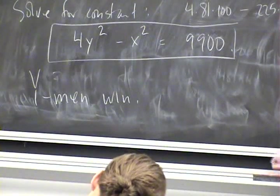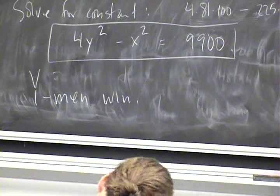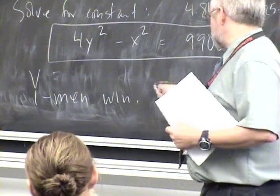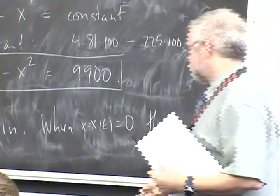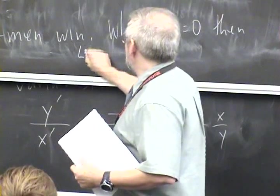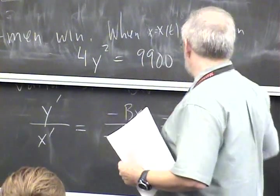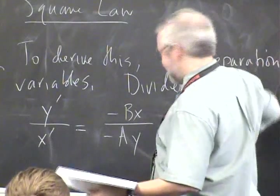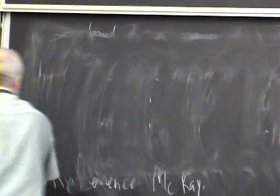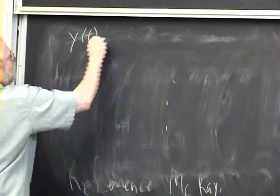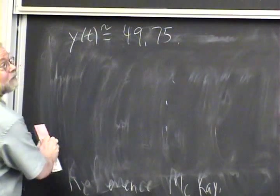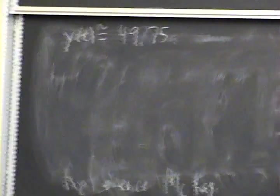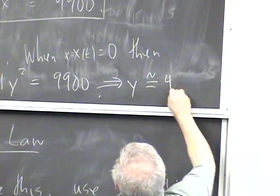We know from Lanchester's Square Law, if the answer was negative the X would win. In fact, we can actually say when. When X(t) is 0, then 4Y² = 9900, which is 49.75 approximately. Y(t) ≈ 49.75.